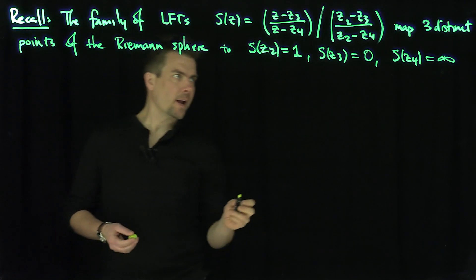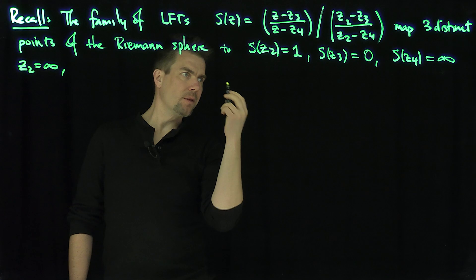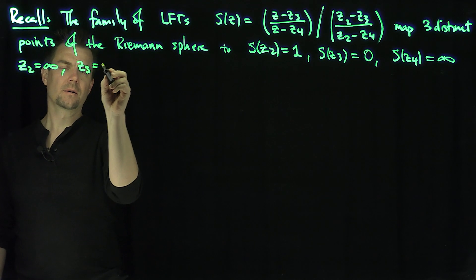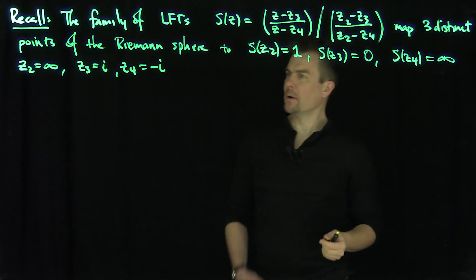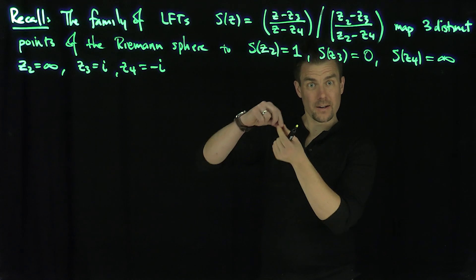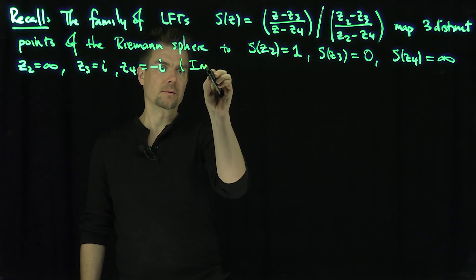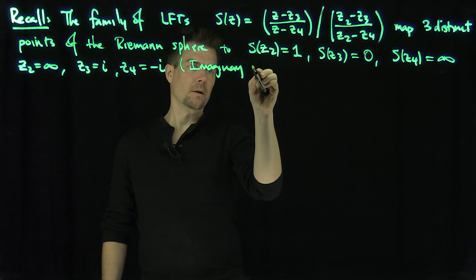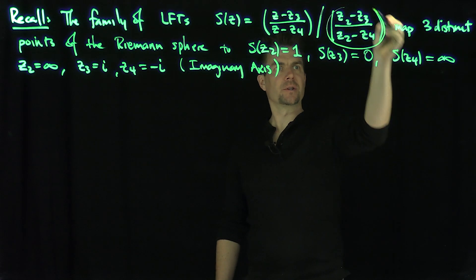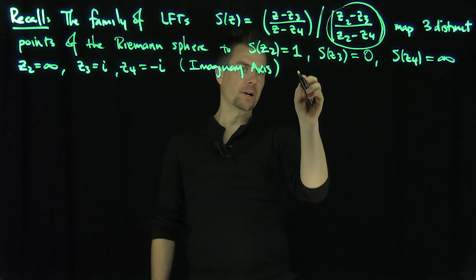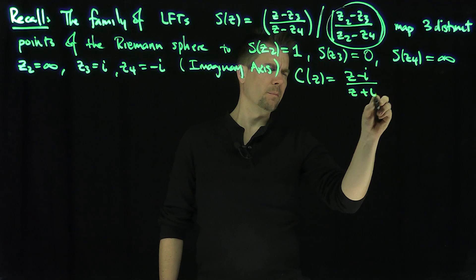I'm interested in the particular case when Z2 is equal to infinity, when Z3 is equal to i, and Z4 is equal to negative i. Those three points are on the imaginary axis. And of course if Z2 is equal to infinity, the term in the denominator just tends to 1. So your mapping is going to be called C of Z, and it's going to be Z minus i over Z plus i.